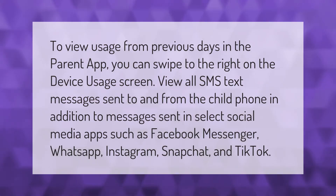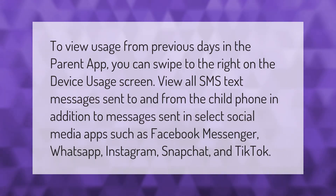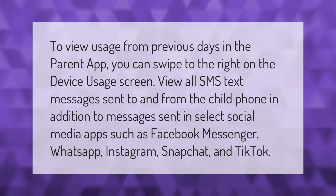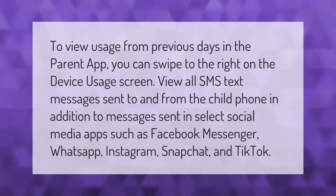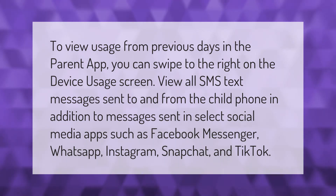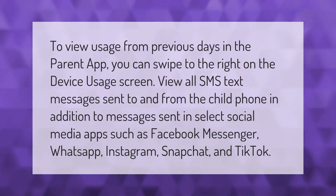To view usage from previous days in the parent app, you can swipe to the right on the device usage screen. View all SMS text messages sent to and from the child's phone, in addition to messages sent in select social media apps such as Facebook Messenger, WhatsApp, Instagram, Snapchat, and TikTok.